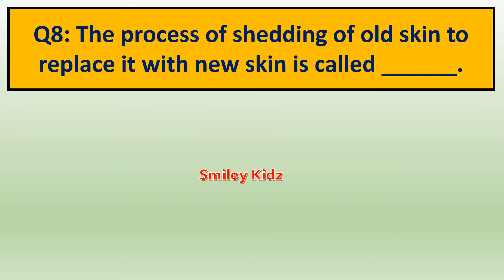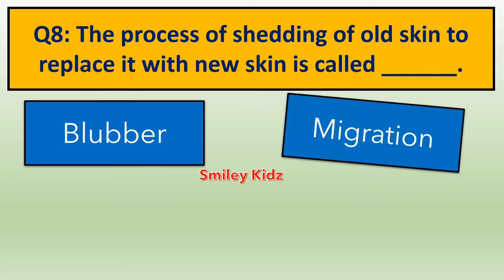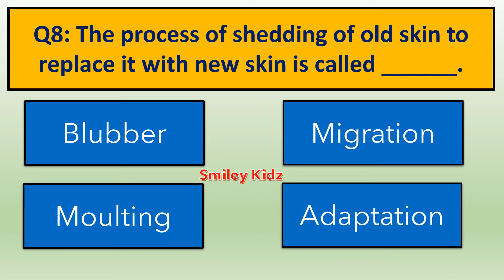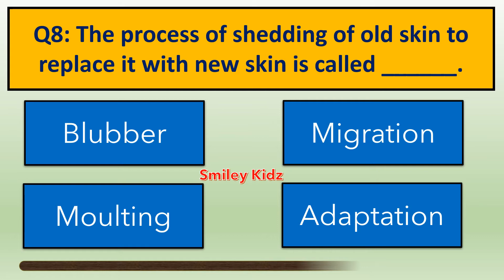Question number 8. The process of shedding of old skin to replace it with new skin is called — options are: A. Blubber, B. Migration, C. Molting, D. Adaptation. The right answer is Molting. The process of shedding of old skin to replace it with new skin is called Molting.